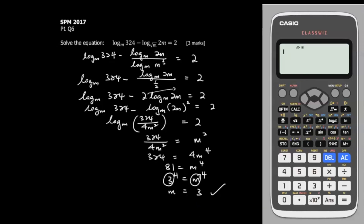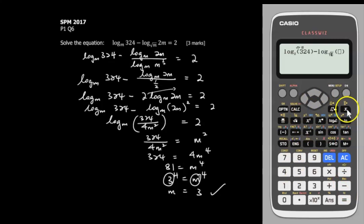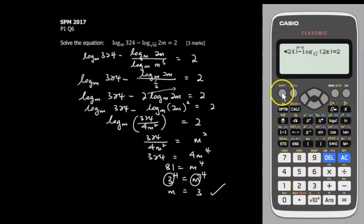Now I'll teach you how to use the Casio Classwiz calculator to get your answer in less than 1 minute. I'll treat M as X. Go to the log button, enter base X, then 324, go to the right, minus, press log with base cube-root of X, then 2X. Use Alpha Calculate to set equal to 2, then press Shift and Solve, press equals. After processing, the answer X = 3 is correct.